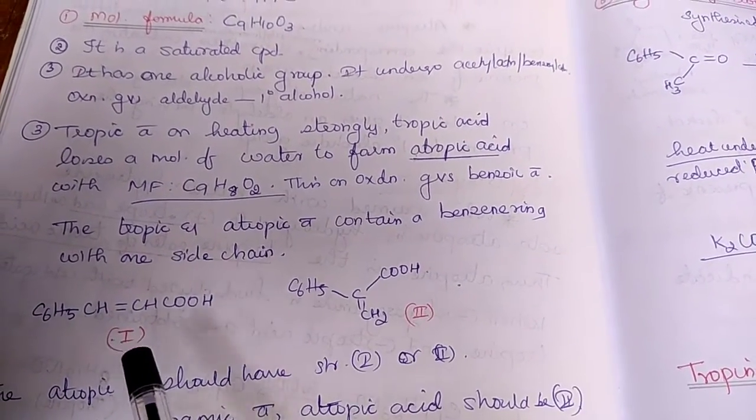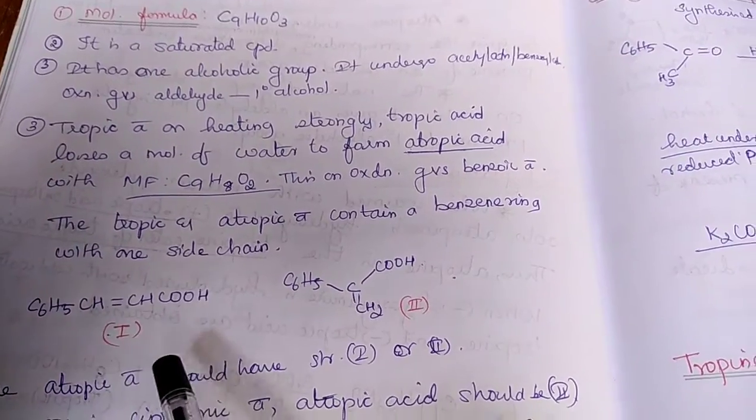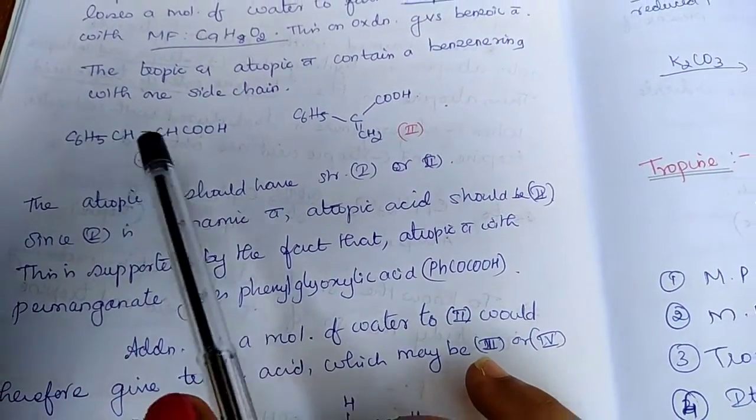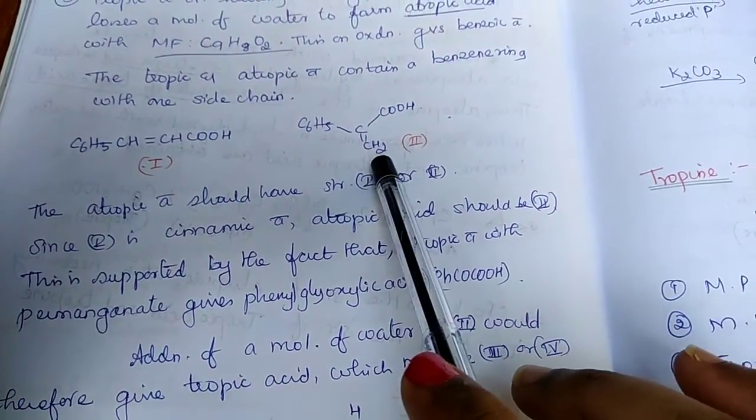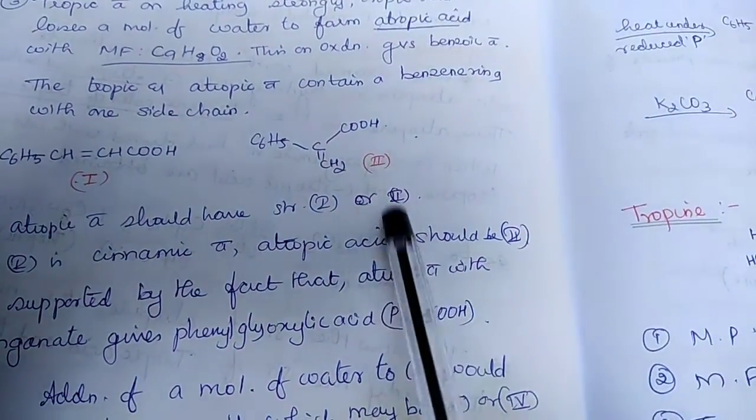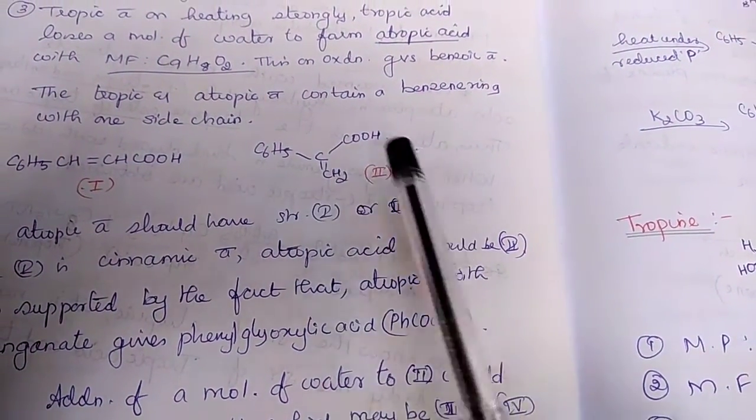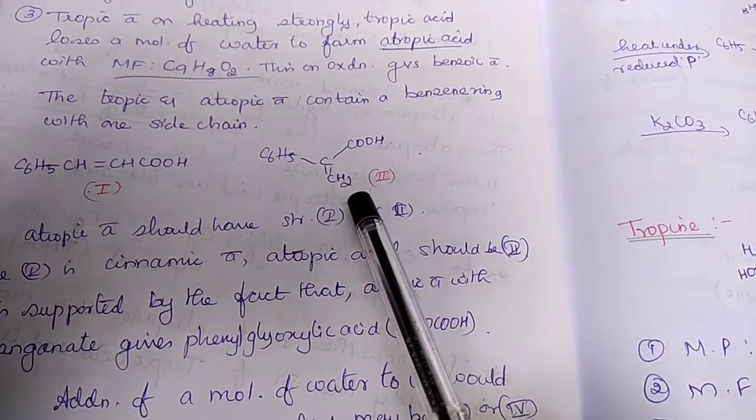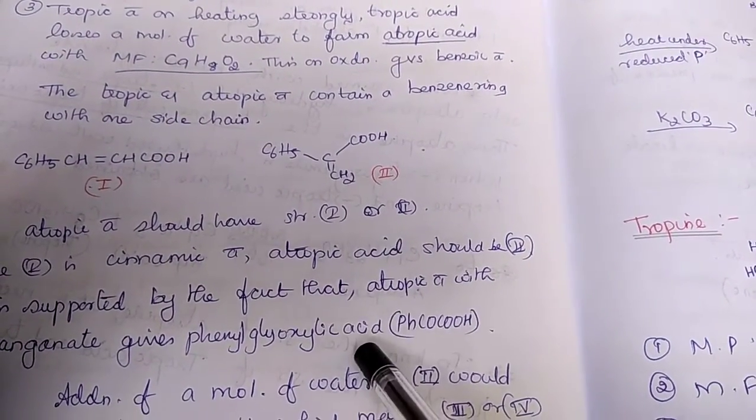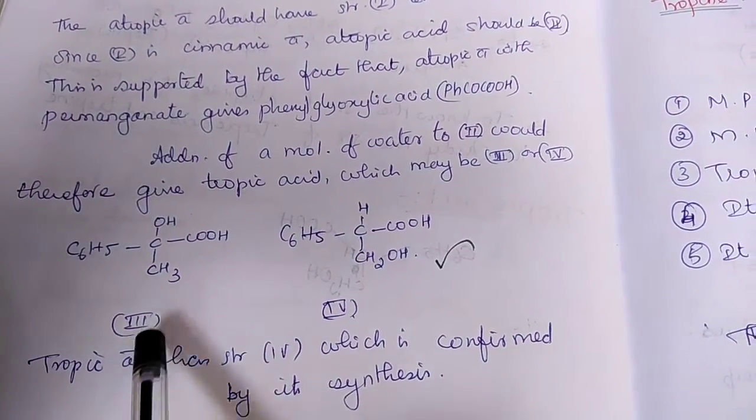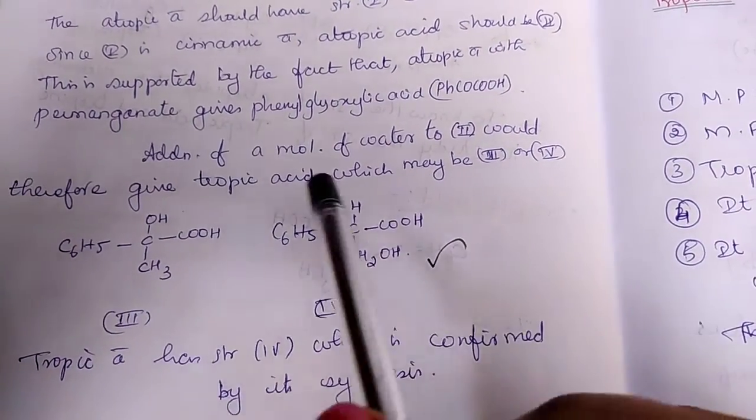So to decide between these two, the first structure is nothing other than cinnamic acid. So the structure of atropic acid must be the second one. We got atropic acid by the removal of water from tropic acid. So by adding a molecule of water to this atropic acid, we get back the tropic acid. So the tropic acid may have either the third structure or the fourth structure. The difference you can see here CH2OH and here CHCH2OH.